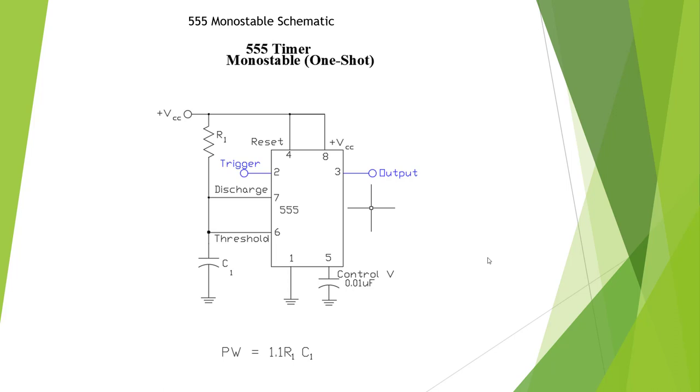There are two basic configurations of the 555 timer. Even though there's many different functions this device could do, the two basic ones we're going to look at are monostable or one-shot. When it's triggered with pin two, based on this resistor and capacitor, it is going to make a single pulse.